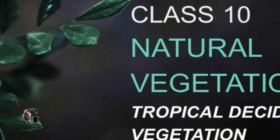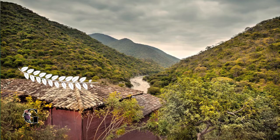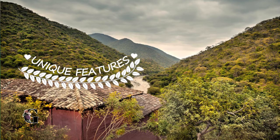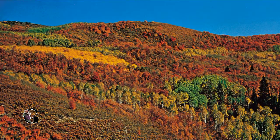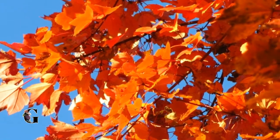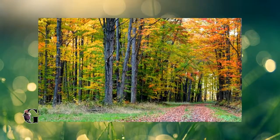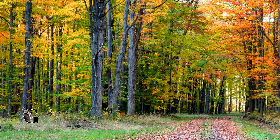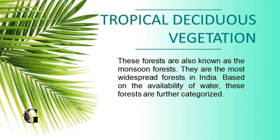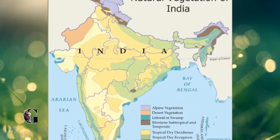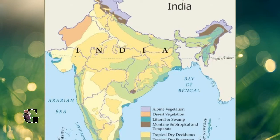Today we'll talk about an amazing vegetation of India. Let's have a look at the unique features of tropical deciduous forest. The tropical deciduous forest is found mainly in the tropical areas. The trees in this forest lose their foliage at the end of the typical growing season and are called the deciduous forest. Often the tropical deciduous forests are also labeled as the monsoon forest.